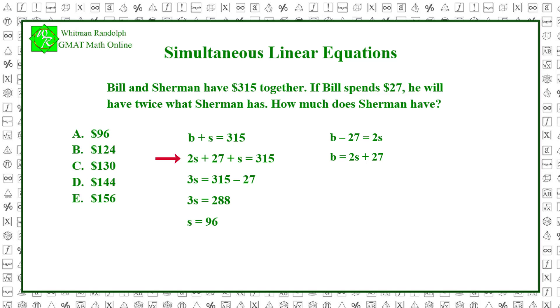3s equals 315 minus 27. So 3s equals 288 and s equals 96. So the correct answer is a.